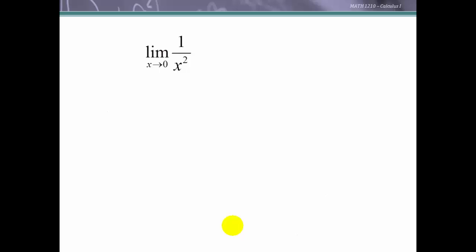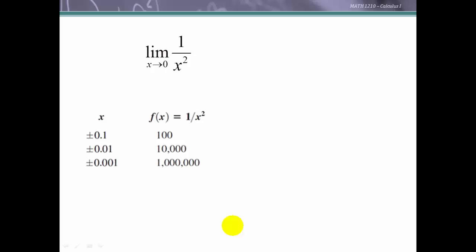One last example. Let's look at the limit as x approaches 0 of 1/x². This function is not defined when x = 0, but let's look on either side as we approach 0. Since we are squaring x, we're going to get positive values from either side — it doesn't matter if we put in 0.1 or -0.1, we get the same values. So we'll write it as ±. As x values get closer and closer to 0 from both sides, the function becomes larger and larger. For example, putting in 0.1 = 1/10, squaring gives 1/100, so 1 over that is 100. As x gets smaller and smaller, this function is going to become larger and larger.